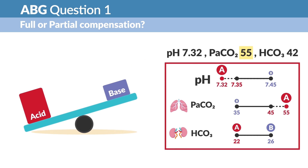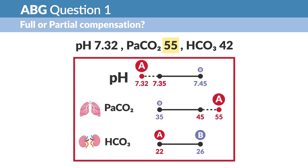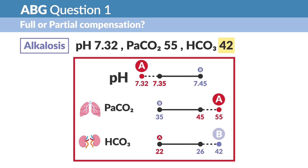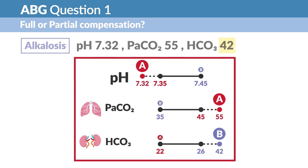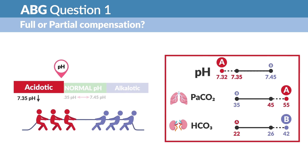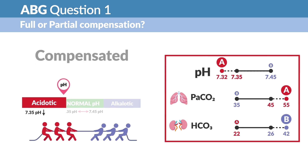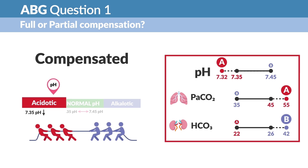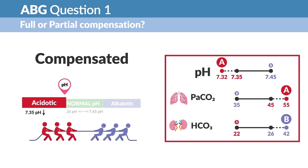The body is in an acidotic state. Now step three, the tricky part: compensation. HCO3, our bicarb, is 42 — we have a high base. The body is trying to pull us out of that acidosis and back into balance. This means compensation — it's trying to work out its problems and find that common ground.